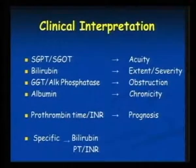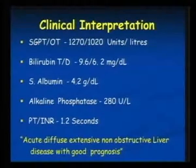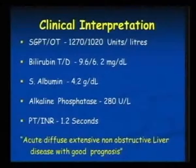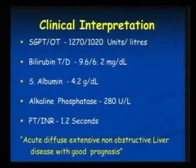Prothrombin time is a good prognostic marker — that tells you about the prognosis. SGOT — you need to maintain that ratio when the liver is involved. If you have a systemic disease like dengue fever, you see SGPT elevation, mild, but SGOT is more. For example, this is an LFT of a patient who has SGPT and SGOT in the thousands, bilirubin is direct hyperbilirubinemia more than 20%, alkaline phosphatase is elevated, albumin is normal, and INR is normal. What do you say? It's an acute, diffuse, extensive, non-obstructive liver disease with a good prognosis. That's the clinical interpretation. The rest is seen by the specialist — our job is done. This is a simple interpretation of clinical LFTs.